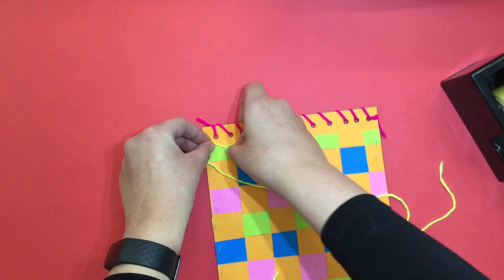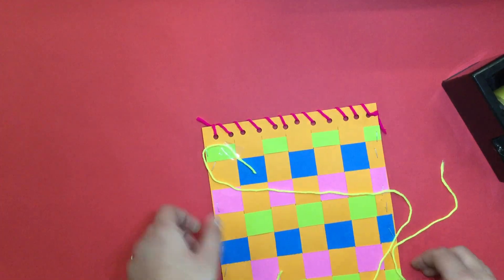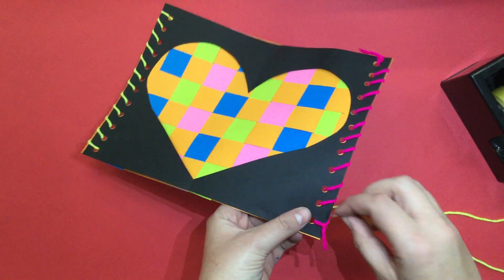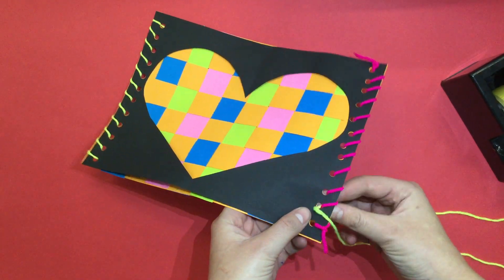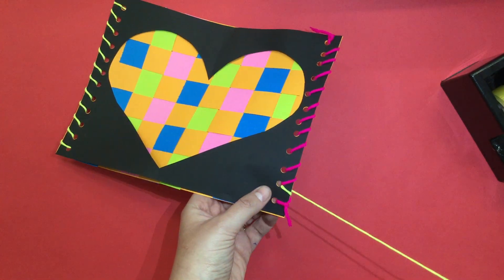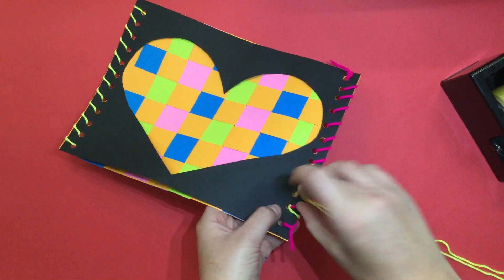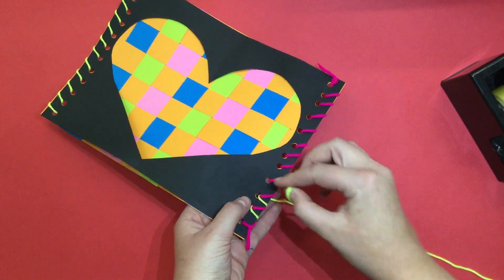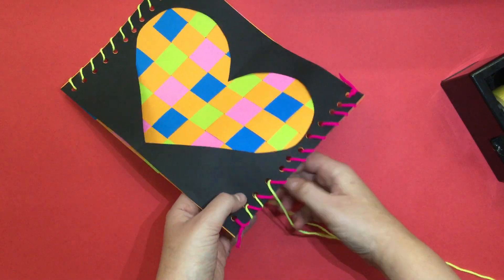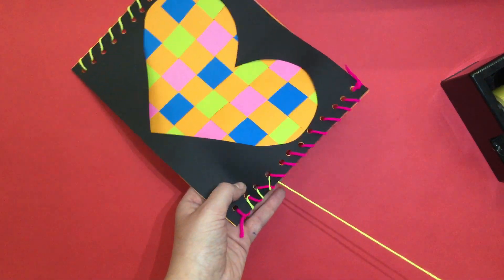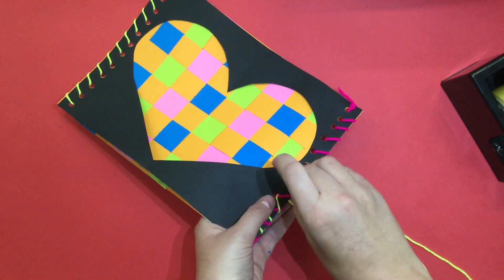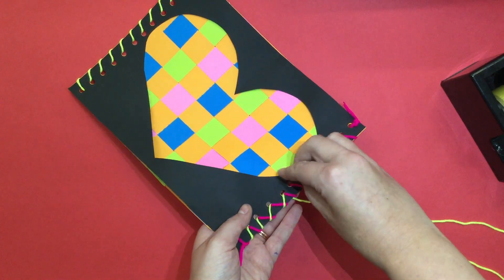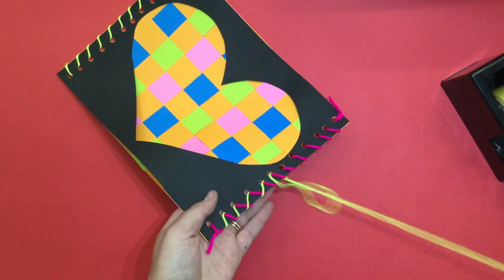I'm going to go ahead and tape my string again, and now what I'm going to do is I'm actually going to decide to go through the top of my string. That way I actually create an X with my yarn or like a zigzag pattern because I'm going in the different direction. Instead of going from the bottom, I'm entering my holes from the top of my paper.